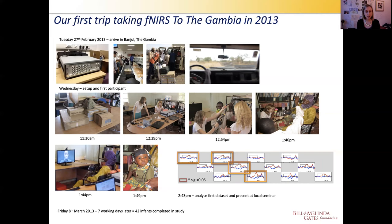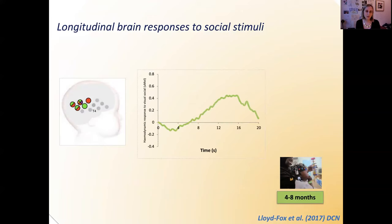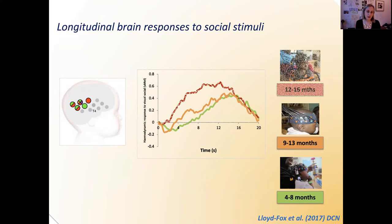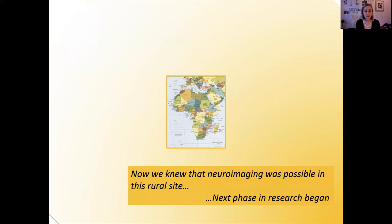Over the course of those two weeks, reflecting only seven working days, we were able to test over 40 infants and complete a full study. Over time during that first phase, we gathered longitudinal data sets to look at brain responses to social stimuli over time, finding that the response was localized to exactly the same area found in UK research. From that first initial collaboration, several papers came out, and this allowed us to get to the next phase of research.